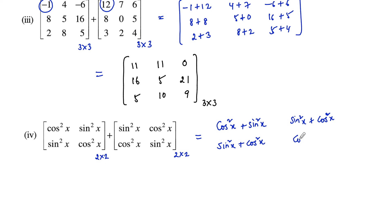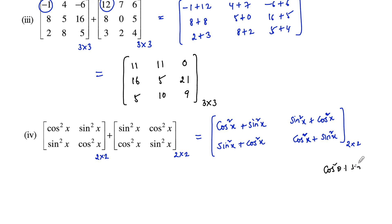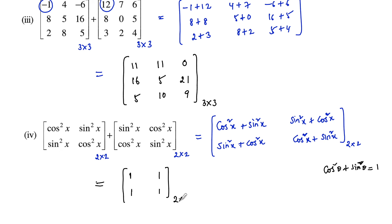And last: cos²x plus sin²x. We know that sin²θ plus cos²θ equals 1. So we can write: cos²x plus sin²x is 1, sin²x plus cos²x is 1, and again cos²x plus sin²x is 1. So which is again a 2 by 2 matrix with all entries equal to 1.